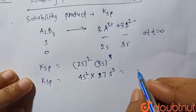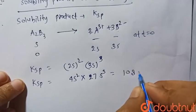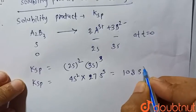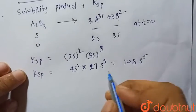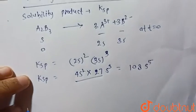27S cubed, that is 108S to the power 5. So in this way we can calculate the Ksp.